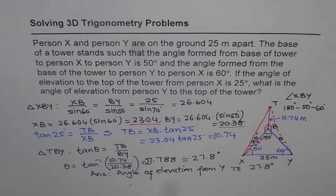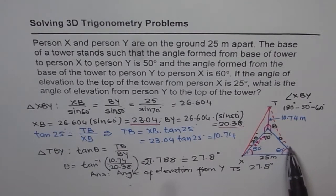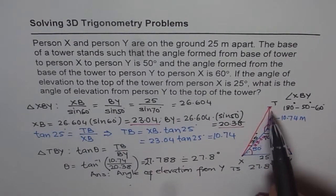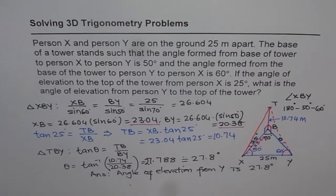That is how we solve this question. The strategy to understand: when you read a word problem, draw a figure to represent it. Once you have the figure, identify what is given and what you need to find. In this case, we solved triangle XYB using the sine law to find both sides, then found the tower height common to both triangles XBT and TBY, which gave us the answer. I hope this strategy helps you answer similar questions. Thank you and all the best.